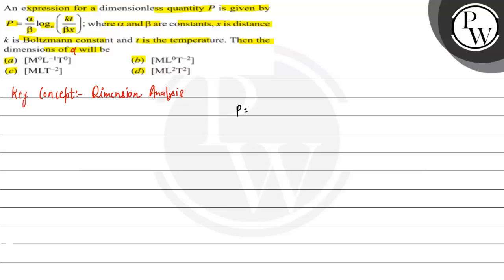Let's take a look at the expression given. The expression phi is equal to alpha by beta times log of kt by beta x. Phi is a dimensionless quantity. For the log function or any trigonometric function, the argument must be dimensionless.